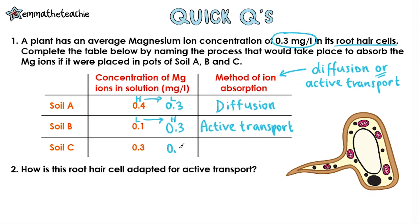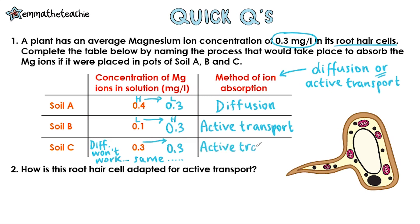Soil C is a special case: 0.3 and 0.3 are the same concentration. Diffusion can't work because diffusion always moves substances from high to low concentration. Therefore our only option is active transport — because as soon as any of those magnesium ions move from the soil into the root hair cell, it's going against a concentration gradient.